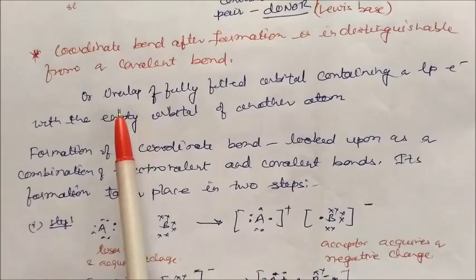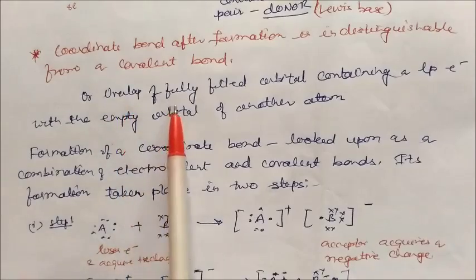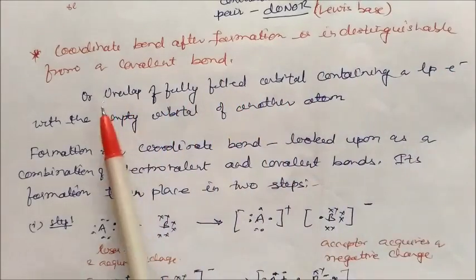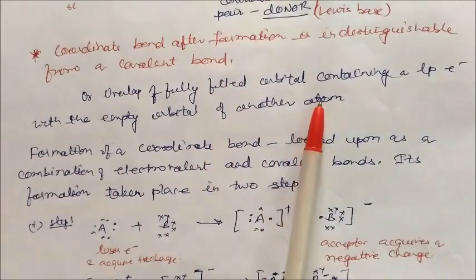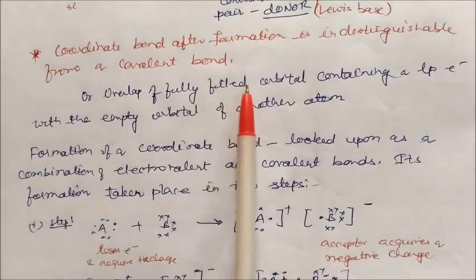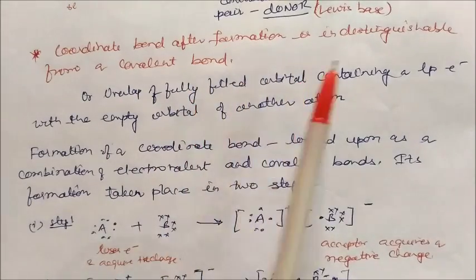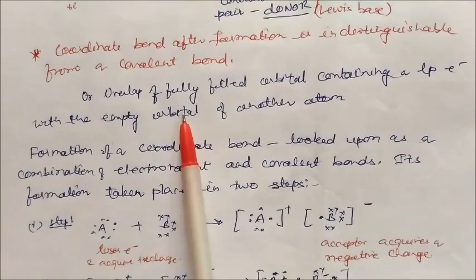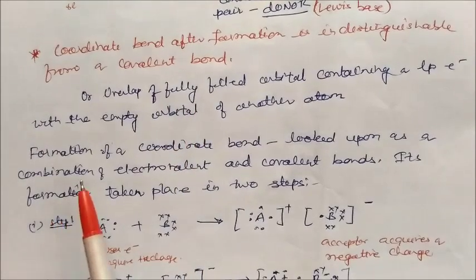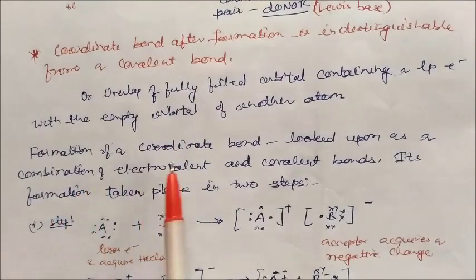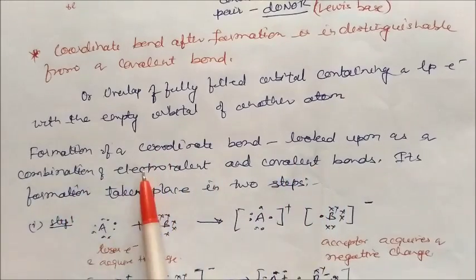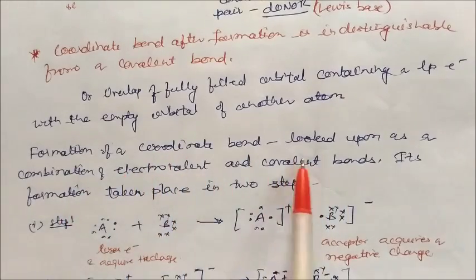There is one more definition: overlap of fully filled orbitals containing a lone pair of electrons with the empty orbital of another atom — that is, fully filled orbitals giving an electron pair to empty orbitals. This is another definition of coordinate bond. Its formation is looked upon as a combination of electrovalent and covalent bonding.